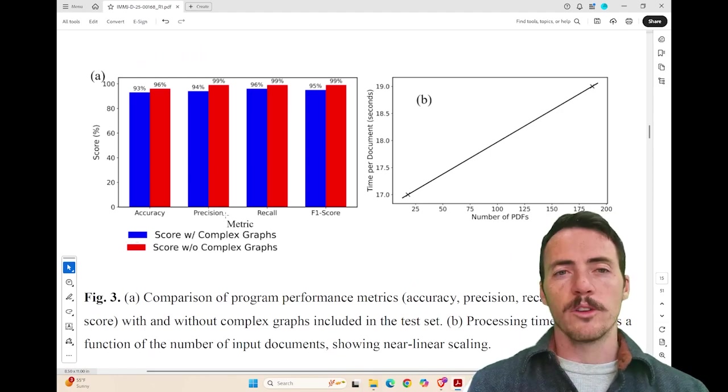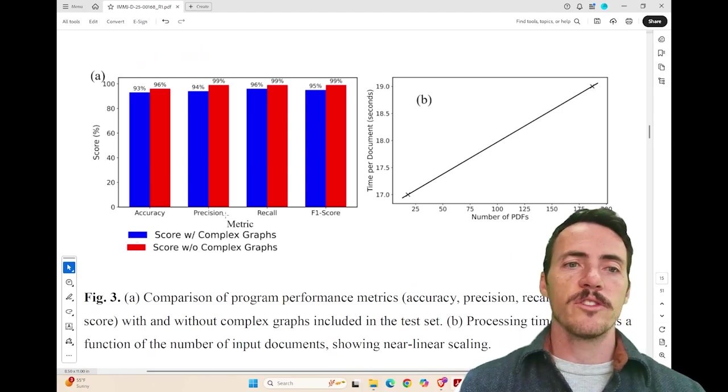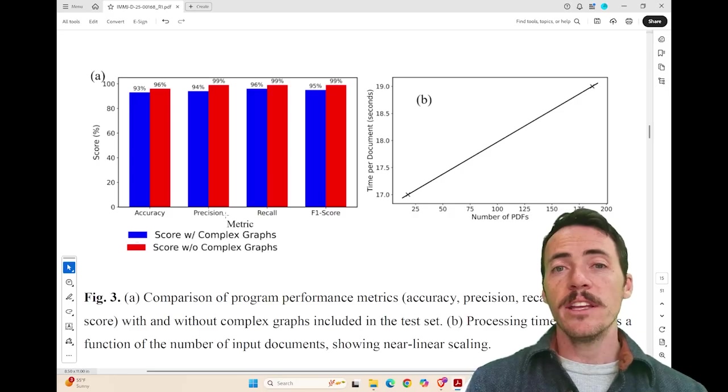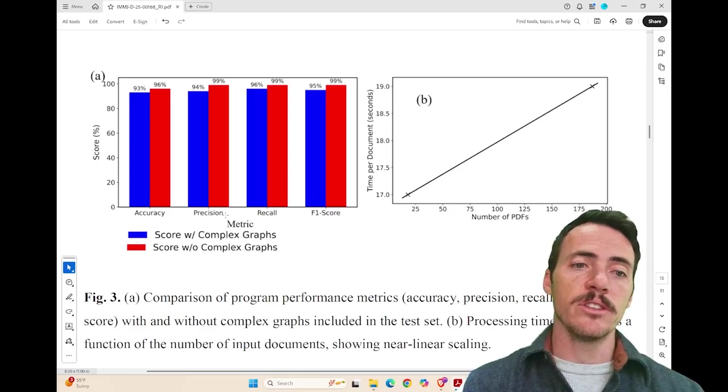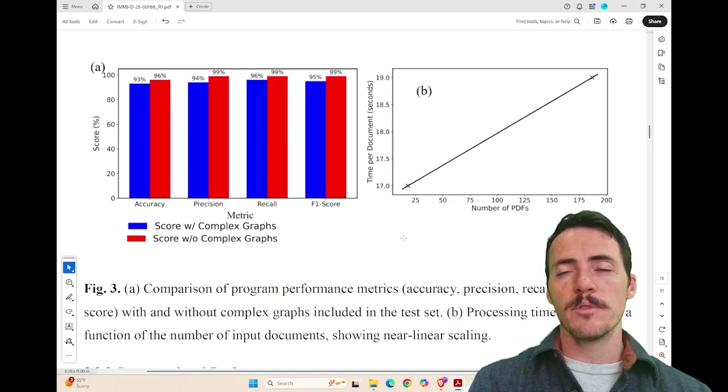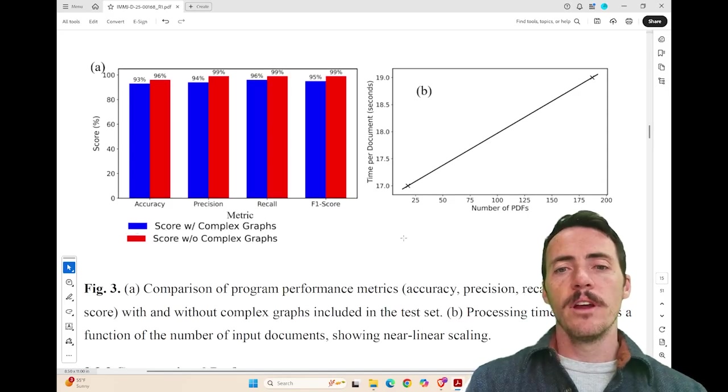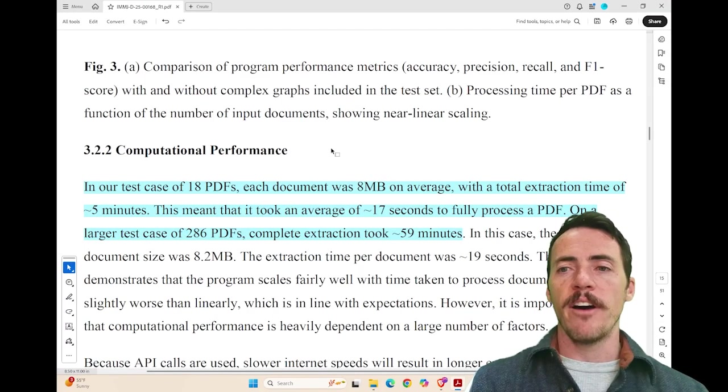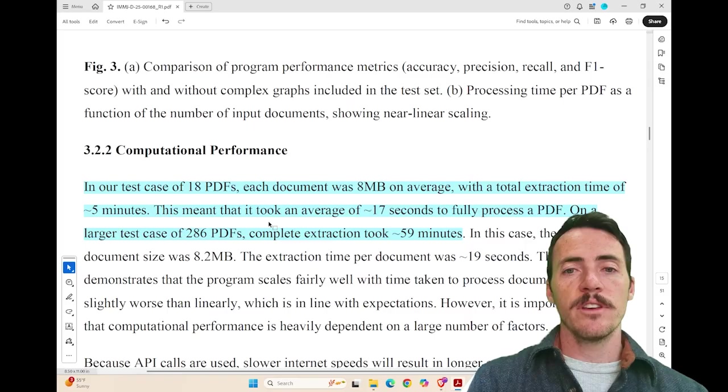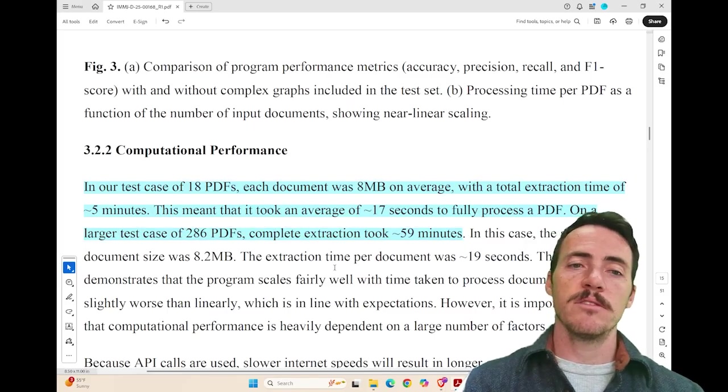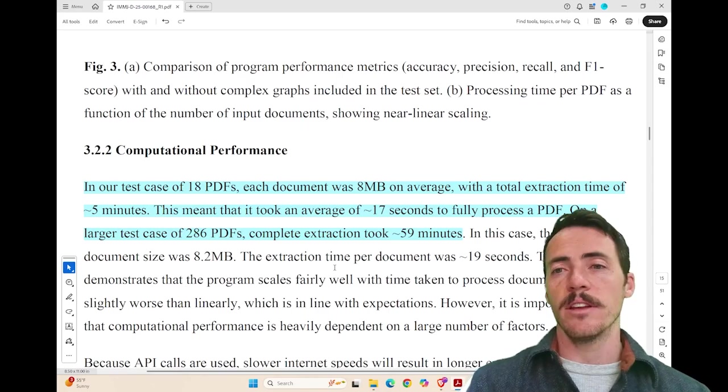So any time when we're building one of these models, we're interested in performance. So what is the score for accuracy, precision, recall, and F1 score? It looks pretty dang good. Check this out. They're scoring it with and without complex graphs. They actually benchmark it against times based off the number of PDFs that they gave it. So they had two scenarios. They had one where they had 18 PDFs, eight megabytes each, took about five minutes to extract the data. But check out this one. 286 PDFs took about 59 minutes. So these are not crazy times to get that data extraction.